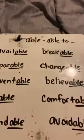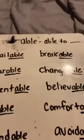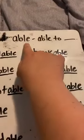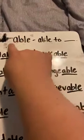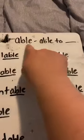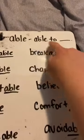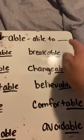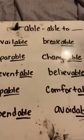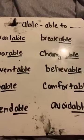Today we're going to talk about the sound ABLE. A-B-L-E says ABLE. And this suffix means 'able to blank' — it means you're able to do something, or it's able to be that.